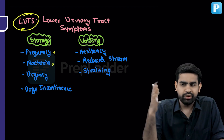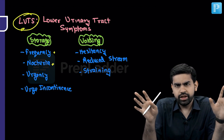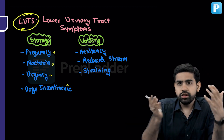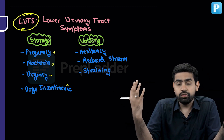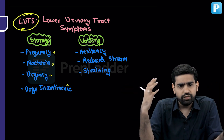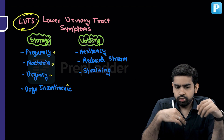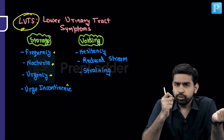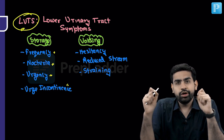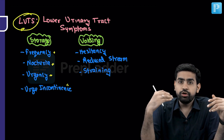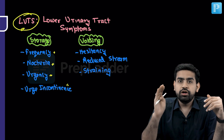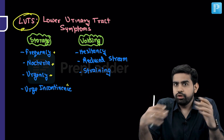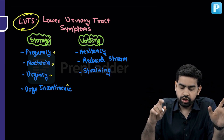Nocturia — how many times the patient has to get up at night: less than once is fine, more than one to two times is worrisome. Urgency is a storage symptom meaning the patient must go to the washroom immediately. Urge incontinence is when the patient cannot even hold the urine — some leaks out before reaching the washroom. That is the difference between urgency and urge incontinence.